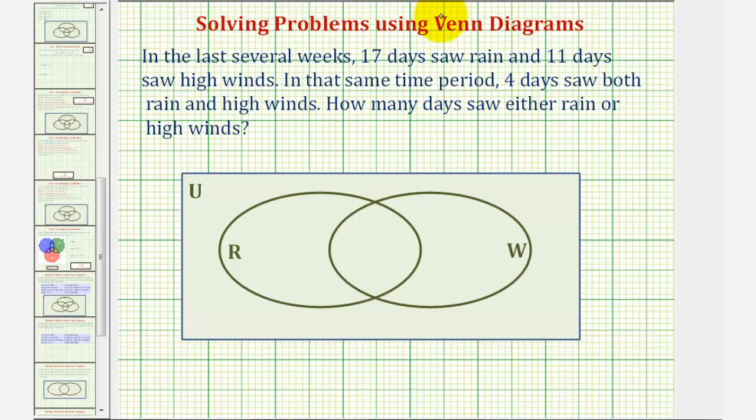Let's solve this using a Venn diagram, where set R represents the days that saw rain, and set W represents the days that saw high winds.